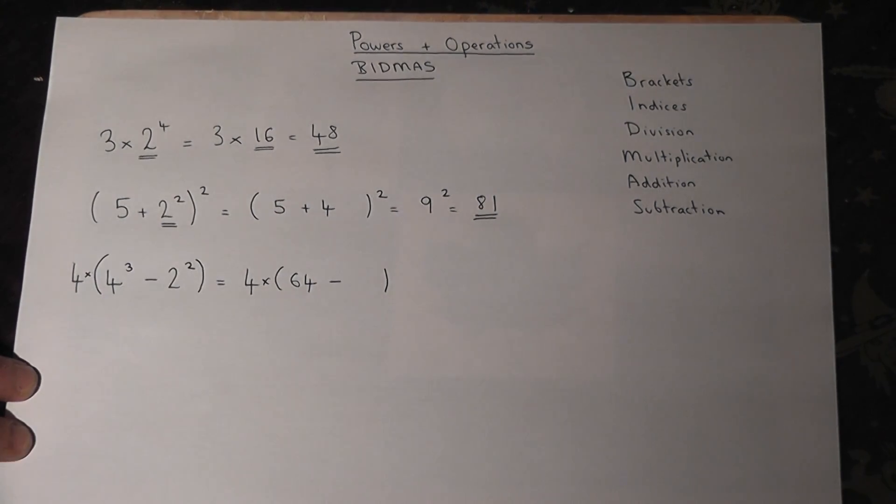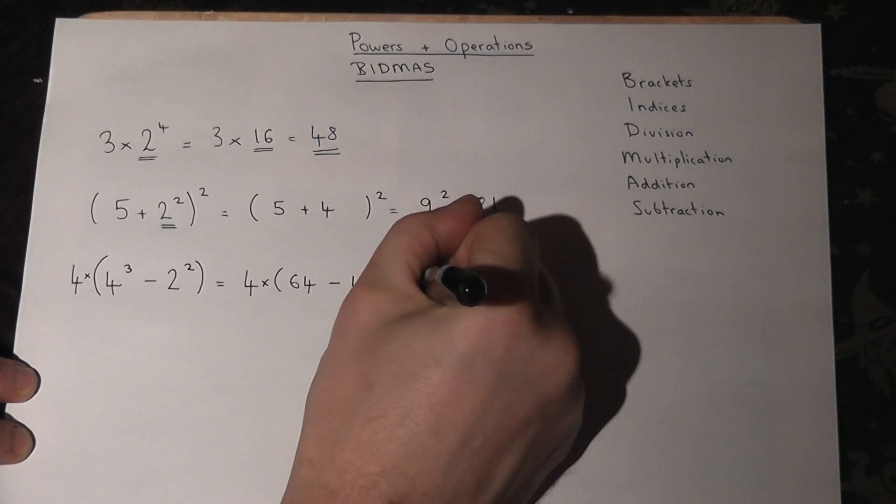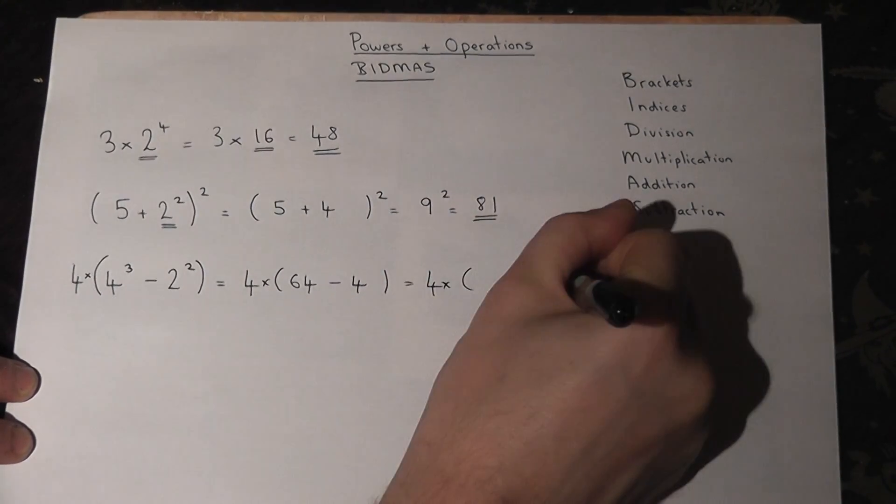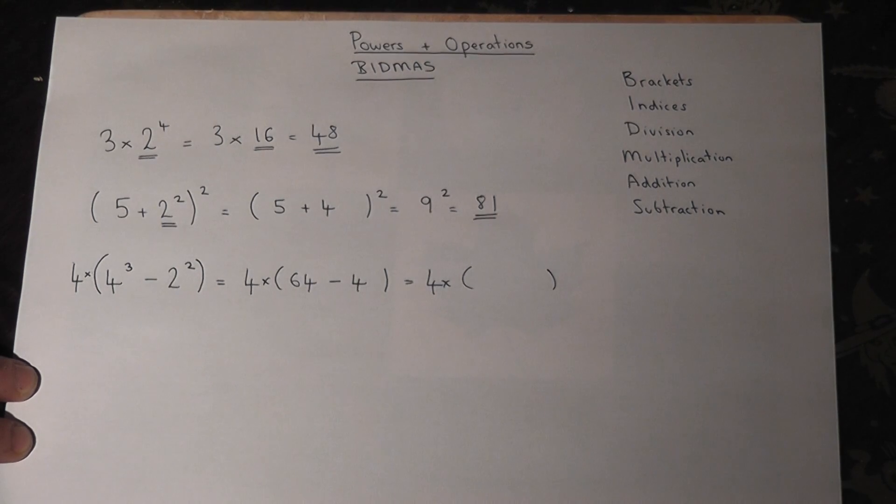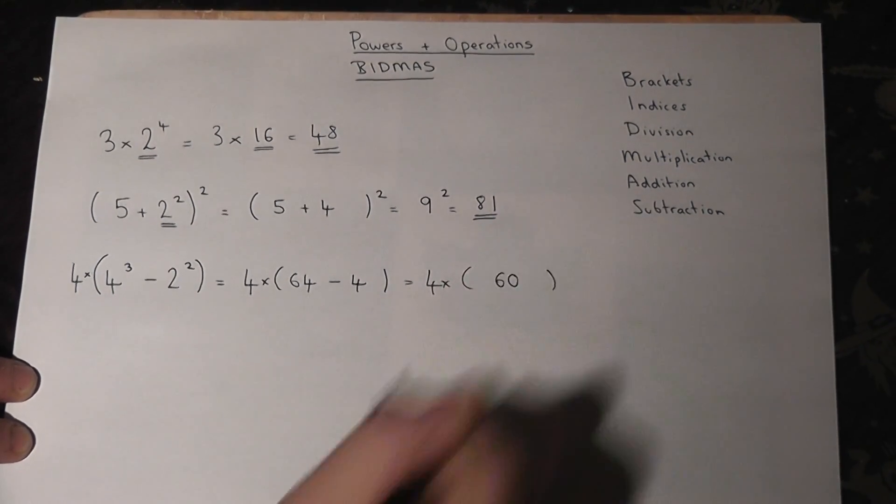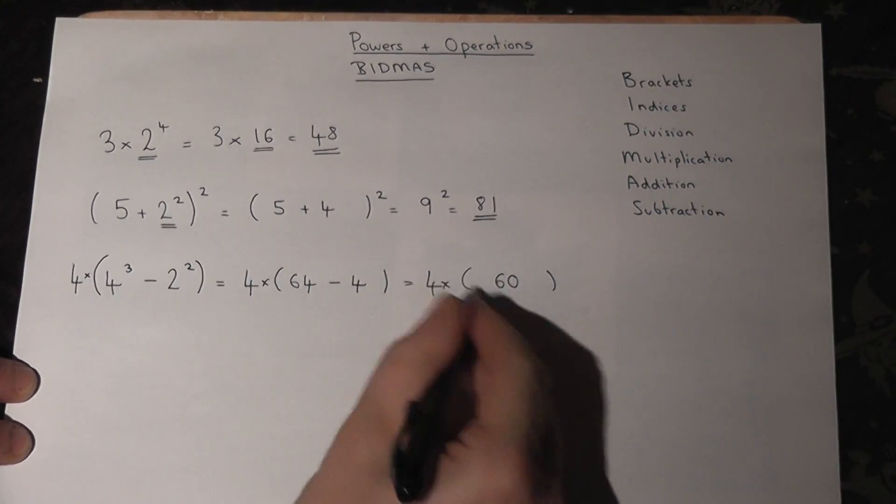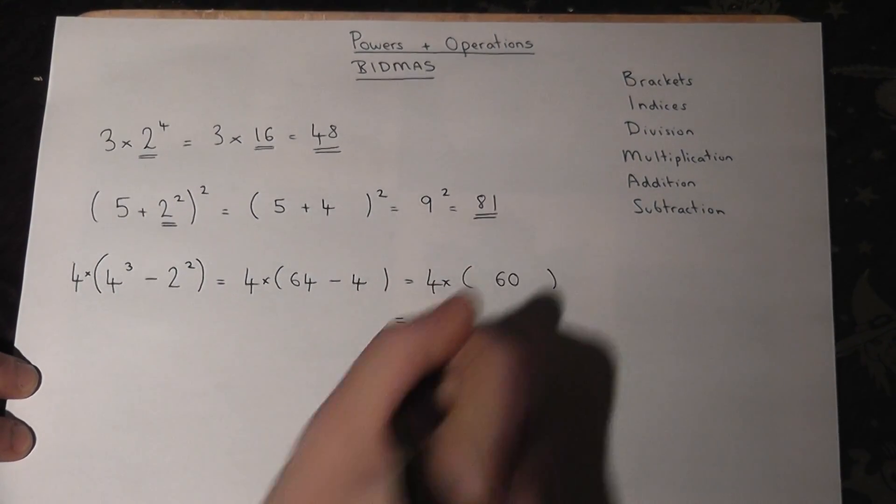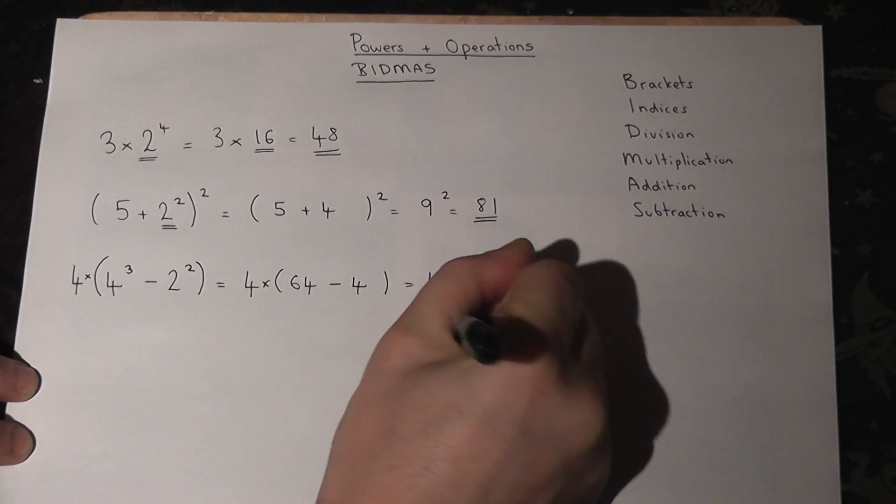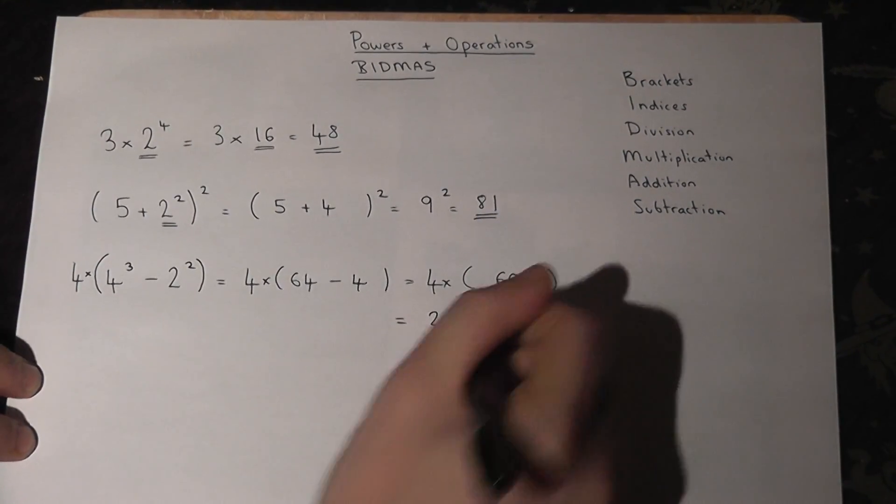We must still work out the bracket, so four lots of, well sixty-four take away four is just sixty. Now this bracket is done, no longer required. It's four lots of sixty. Well four times six is twenty-four, so four times sixty is two hundred and forty.